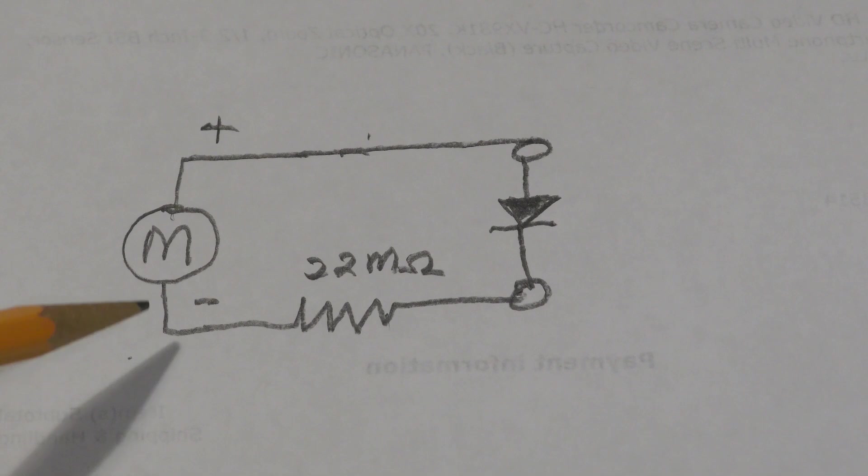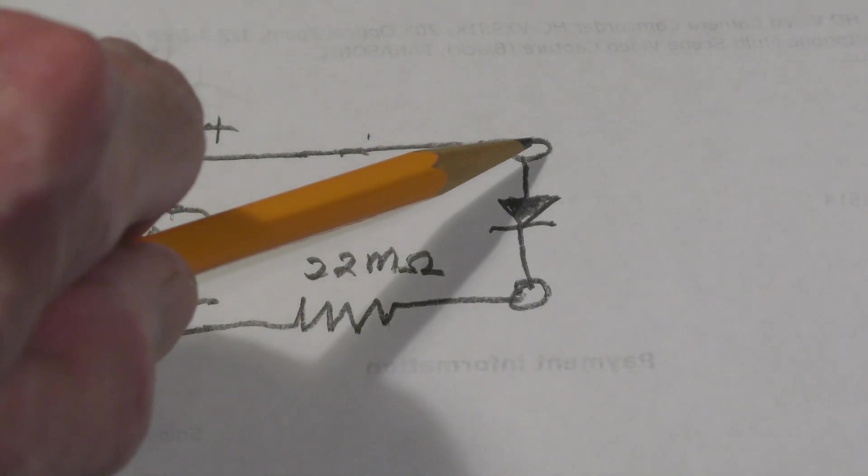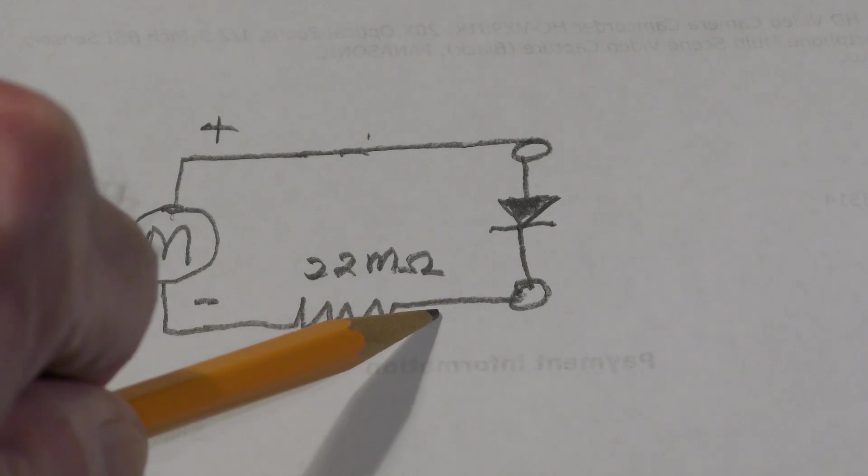When we have it connected in the reverse direction, the diode will break down and current will flow through the 22 meg resistor and be indicated on the meter. In the forward direction, compared to the 22 megohm, this is essentially a short, so we only read the 22 megohm.